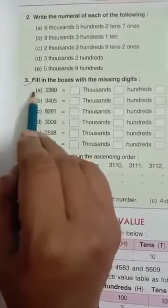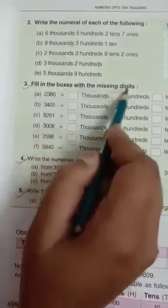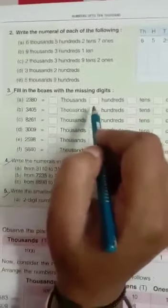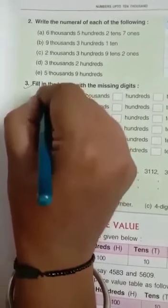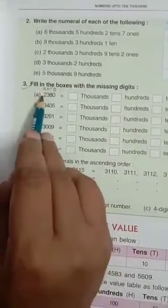In question number 3, fill in the boxes with the missing digit. Means you have to write the digit according to their place. Okay. Now in thousand place, here you see, ones, tens, hundred, thousand. Now, in thousand place, two.